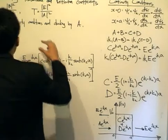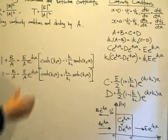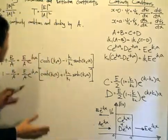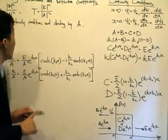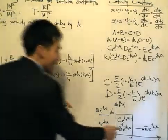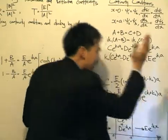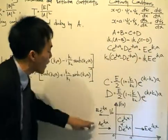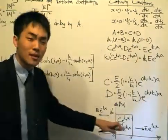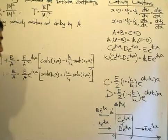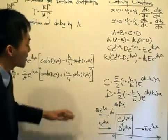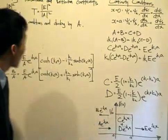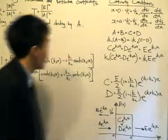A, B, and E correspond to the intensities of the waves involved in the problem, so you must make sure that you use the correct wave solutions. For the transmission coefficient, we are taking the intensity of the wave that exits the potential barrier divided by the intensity of the wave that enters the potential barrier. For the reflection coefficient, it's the intensity of the wave that gets reflected divided by that which gets transmitted into the potential barrier.